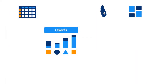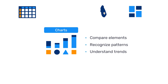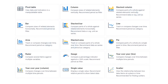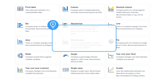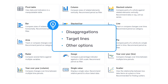Charts are the second visualization tool in DGIS-2. When you need to compare elements, recognize patterns, or understand trends, you can select from a list of different chart types that best suits your analysis needs and customize it to include disaggregations, target lines, and more.